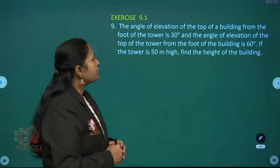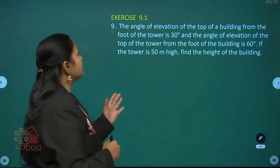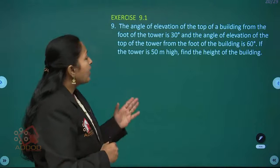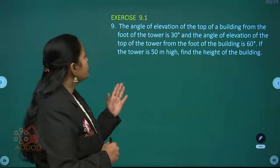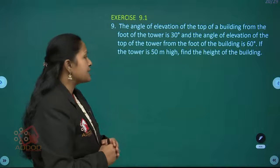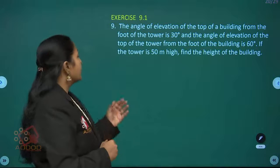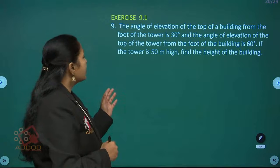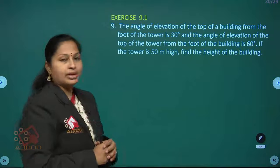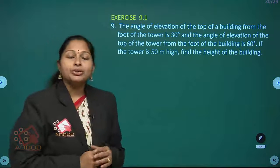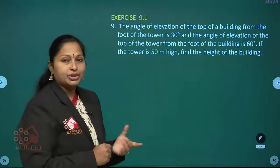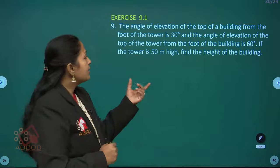Here the question is: the angle of elevation of the top of a building from the foot of the tower is 30 degrees, and the angle of elevation of the top of the tower from the foot of the building is 60 degrees. If the tower is 50 meters high, find the height of the building. First, try to draw the figure with the given information.